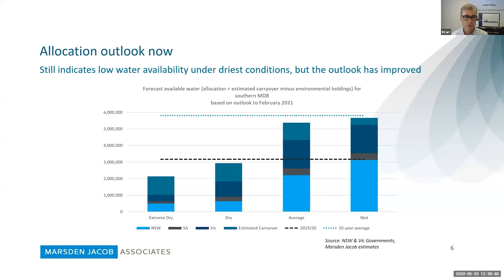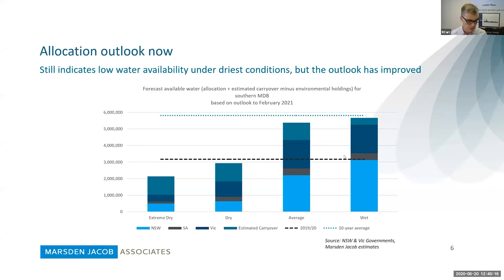On allocation outlook, we're indicating low water availability with forecast water below extreme dry and average circumstances compared to 2019-20, and also below the 10-year average even under wet scenarios. Things have improved since last time — we still have low water availability under the driest conditions, but the outlook has improved compared to where we were as at February 21. With the amount of water likely to be available through allocation, water prices are going to remain at an elevated level unless we see significant inflows into the system.